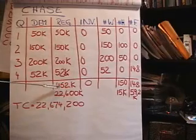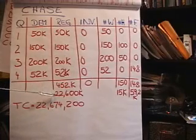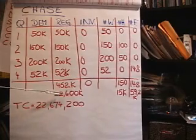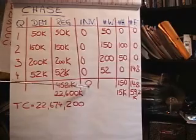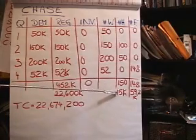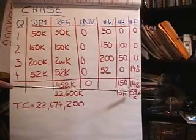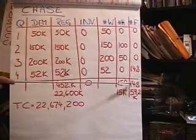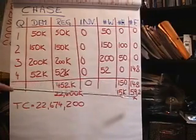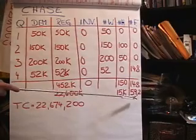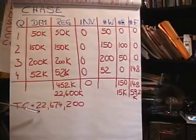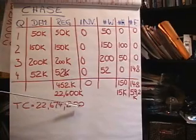When we add it all up, we've got 452,000 pairs of skis with regular production — the same as the previous slide — $22,600,000. We're not carrying inventory this time. We're hiring 150 workers at $100 a piece: $15,000. And we're firing 148 workers at $400 per employee: $59,200. So when we add it all up, I believe this is the cheapest plan: $22,674,200.